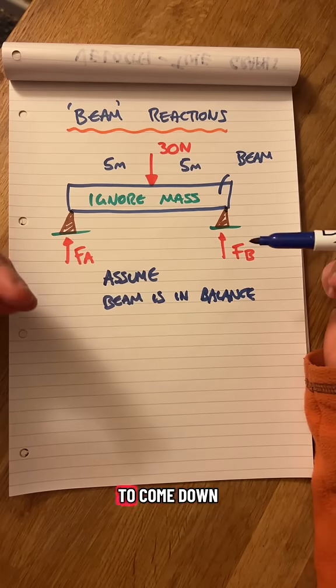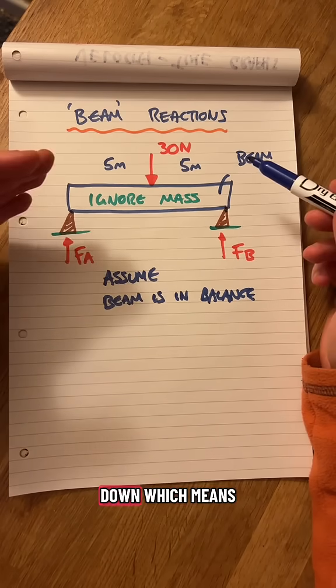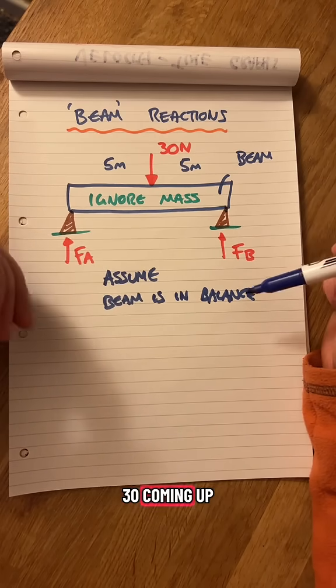What goes up has got to come down. There's 30 coming down, which means there's got to be 30 coming up.